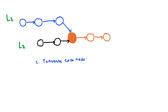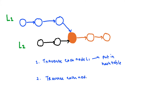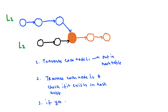Another solution is to traverse linked list one and while traversing, keep each node in a hash table. Then traverse linked list two and for each node check whether it exists in the hash table or not. If it exists, return that intersecting node; otherwise return null.